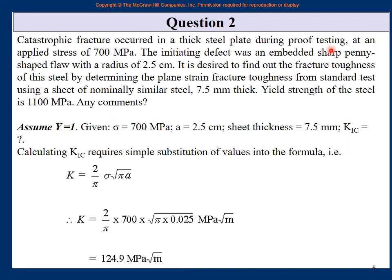Initially you may have thought to assume Y = 1, but if you were in the class you would say no, no, no doctor, what are you doing? It is given that it is a sharp penny-shaped crack. In the case of a sharp penny-shaped crack, we will take Y = 2/π. We do not need to assume it to be 1. It is a penny-shaped crack, and the equation for penny-shaped crack uses 2/π. If it fails under the test, this becomes K1c. So 2/π × 700 MPa × √(π × 0.025 m), which comes out to be 124.9 MPa√m. A very simple problem, but what was the small catch?